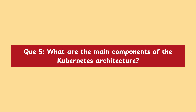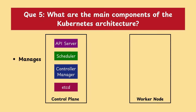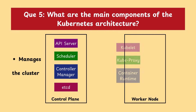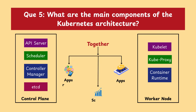Moving on with our next question: what are the main components of Kubernetes architecture? Kubernetes has two main parts: control plane and worker nodes. The control plane manages the cluster and includes the API server, scheduler, controller manager, and etcd. Worker nodes run the actual applications and include kubelet, kube-proxy, and a container runtime. Together, they keep applications running, healthy, and scalable.